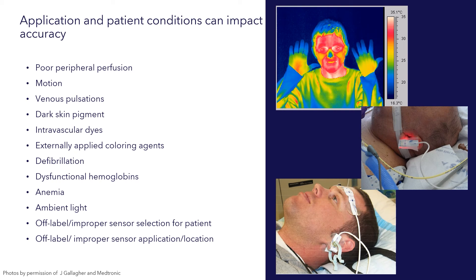Dark skin pigmentation, because of melanin, which readily absorbs the infrared and red light, may overestimate the oxygen saturation of patients with darker skin. Certain intravascular dyes that are injected as part of diagnostic procedures, such as methylene blue, can also create errors within oxygen saturation measurements, as well as externally applied coloring agents or nail polish, especially of the darker variety.